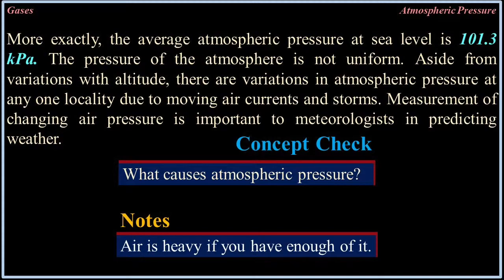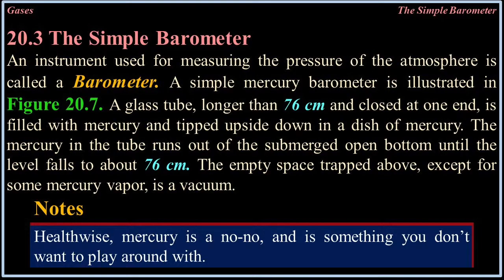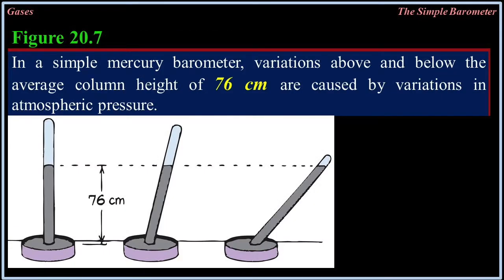20.3 The Simple Barometer. An instrument used for measuring the pressure of the atmosphere is called a barometer. A simple mercury barometer is illustrated in figure 20.7. A glass tube longer than 76 centimeters, enclosed at one end, is filled with mercury and tipped upside down in a dish of mercury. The mercury in the tube runs out of the submerged open bottom until the level falls to about 76 centimeters. The empty space trapped above — except for some mercury vapor — is a vacuum.